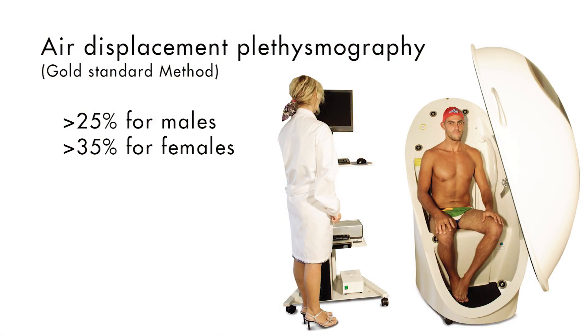It measures body fat using body volume and body weight to calculate body density. Since fat is less dense than other body tissues like muscle and bone, knowing a person's body density can be used to measure body fatness. The air displacement method replaces underwater weighing, which works the same way but is much more challenging to measure. Obesity is defined as having a body fat level greater than 25% if you're a man and greater than 35% if you're a woman.